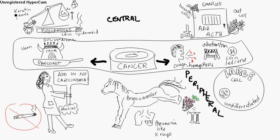Way up in the corner, you've got squamous cell — it's an epidermoid cancer. You've got increasing calcium going up — the calcium is elevated. You've also got keratin pearls. These are centrally located; increased calcium and keratin pearls are key features. Smoking is the number one cause.